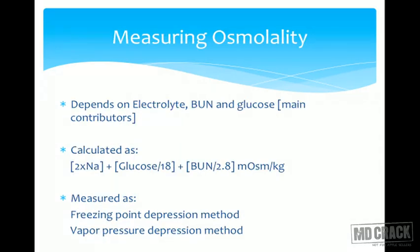Osmolality is the solute load in blood and how is it measured? It's measured by either direct or indirect method. Direct method is freezing point depression or vapor pressure depression, but it's not commonly available. The commonly used method is calculating: 2×sodium + glucose/18 + BUN/2.8. Using milliequivalents for sodium and mg/dL for glucose and BUN, we get the calculated osmolality.